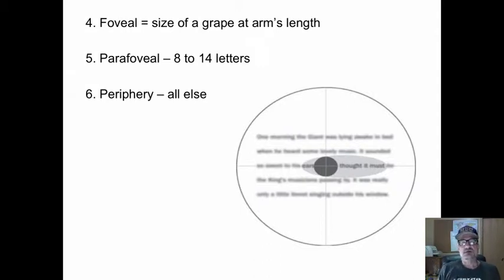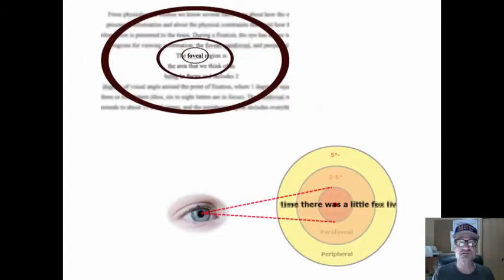Foveal is the size of a grape. Now, foveal is that clear part that you focus in on. It's about the size of the grape at arm's length. That's the only really clear part that you see. But the eye must constantly move to see a clear picture of reality, and that's why the eyeball is going all over. The foveal, 8 to 14 letters on either side, you see it, but it's kind of fuzzy. Peripheral is all else, and that's real fuzzy. Foveal, parafoveal, and all else is peripheral.